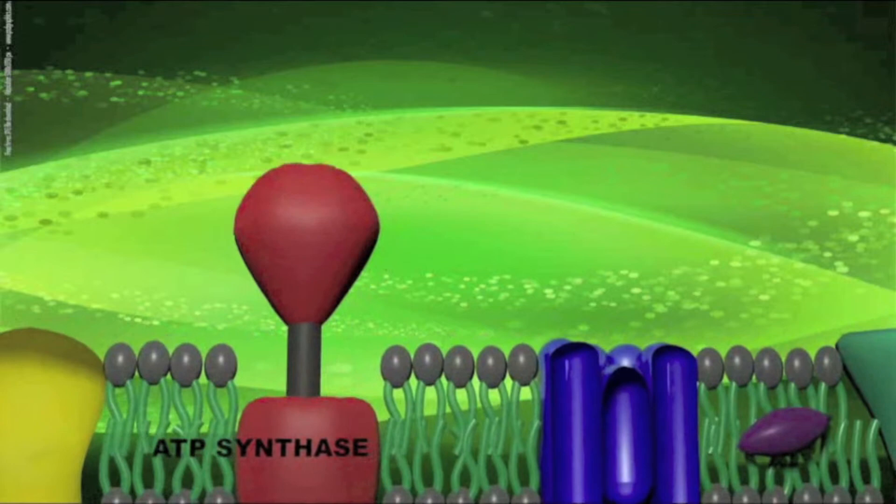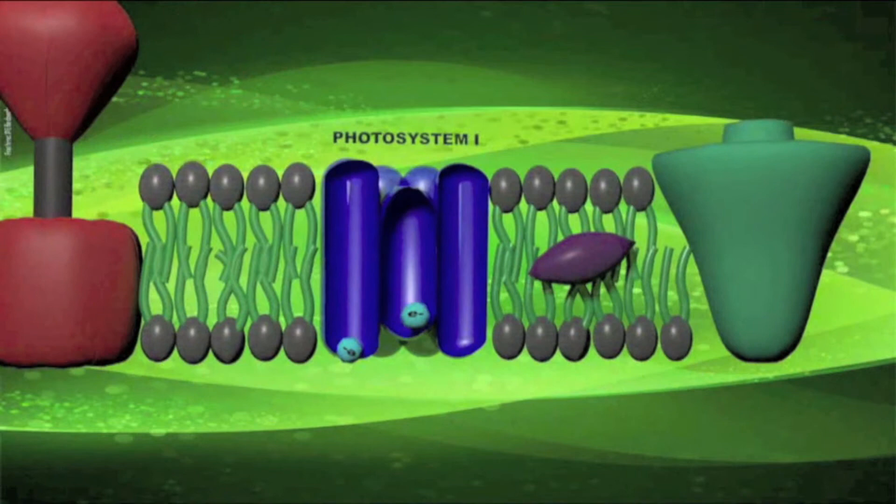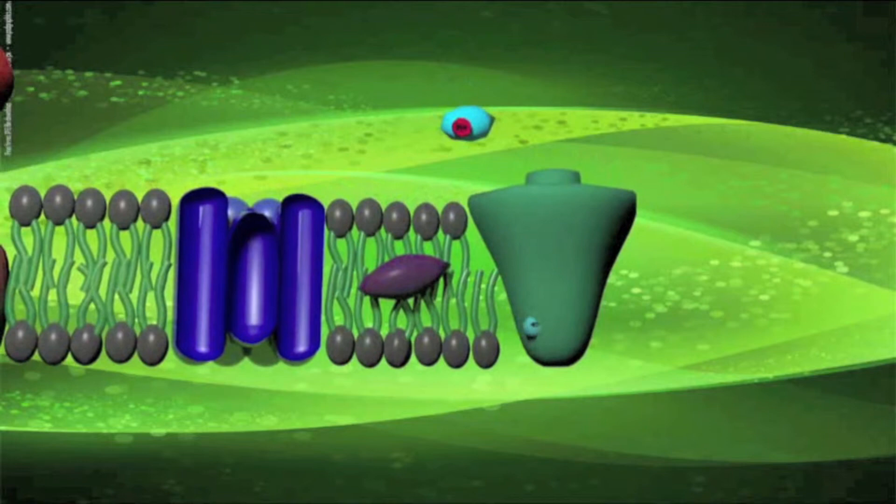Next, photosystem I absorbs a photon of light, passing high energy electrons to ferredoxin. NADP reductase transfers the electrons to produce NADPH from NADP. The electron chain continues, producing nutrients from photons.